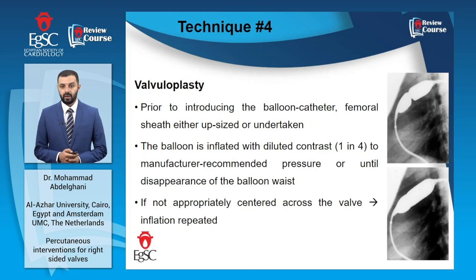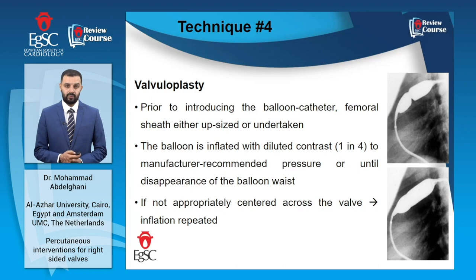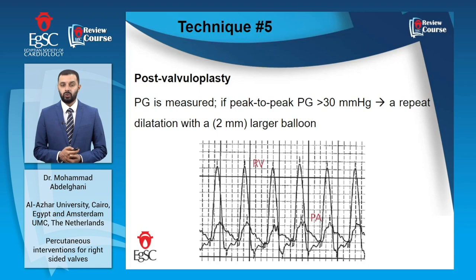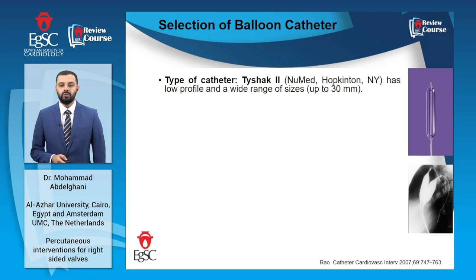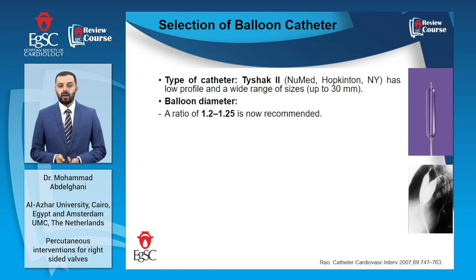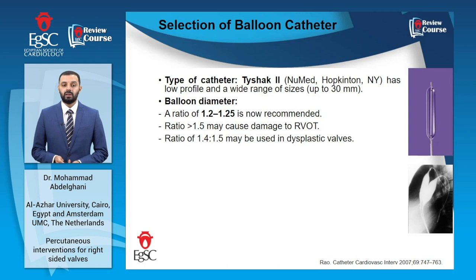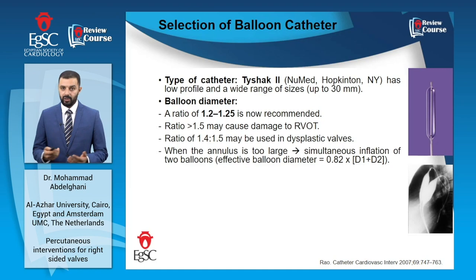The balloon catheter is then introduced, and effective dilatation is identified when the waist disappears. Several attempts of dilatation can be made until this is achieved. After resolution of the waist, a favorable hemodynamic response is documented with an effective decline of the transvalvular gradient. Otherwise, another dilatation using a slightly larger balloon may be tried. Many interventionists use the Tyshak II balloon owing to its wide range of sizes and low profile. The balloon diameter is determined to reach a balloon-to-annulus diameter ratio of around 1.2; a ratio of more than 1.5 should be avoided. When the annulus is too large to be dilated with a single balloon, a double balloon technique can be used.